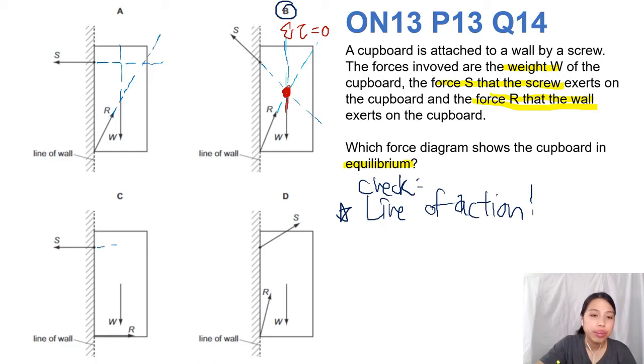To solve it, let's check the others just to be sure. Line of action, line of action, line of action. Wow, this is everywhere. Looks like R and S are kind of like part of a couple. This R and S kind of like a couple because they look like the same magnitude but different direction, so it's going to cause your poor cupboard to go like this and then this side will go down. It doesn't quite seem correct.